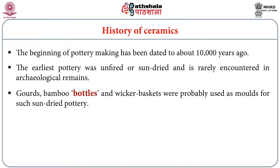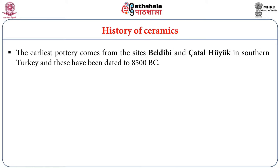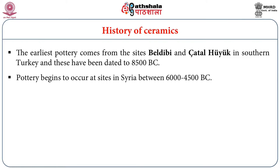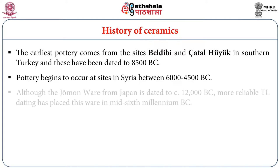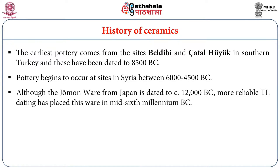In addition to clay, people also used bamboo, natural gourd, and other plant materials as containers. These natural plant materials were used for storing or carrying water and liquid things, and were also used as molds for making forms out of clay. The earliest pottery comes from the sites Çayönü and Çatalhöyük in southern Turkey, dated to 8,500 BC. Pottery begins to occur at sites in Syria between 6,000 and 4,500 BC. Although the Jomon ware from Japan is dated to circa 12,000 BC, more reliable TL dating has placed it in the mid-6th millennium BC.